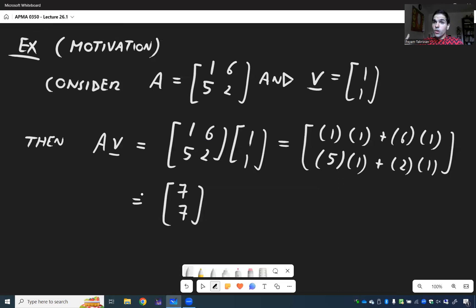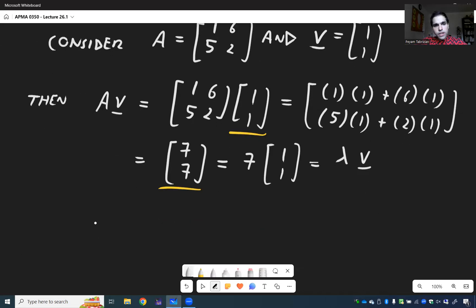And in particular here, notice the output 7, 7 isn't just a random vector, but precisely a multiple of the input. So in fact, 7, 7 is a multiple of 1, 1, which is really some number lambda, which is 7, and V, which is 1, 1. Where lambda is 7 and V is 1, 1.